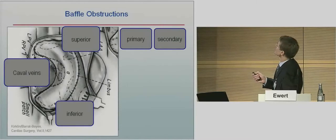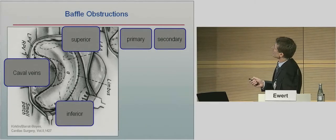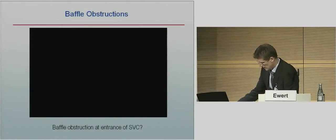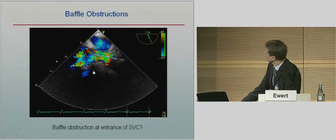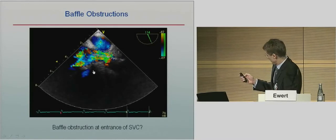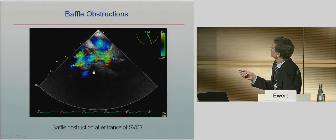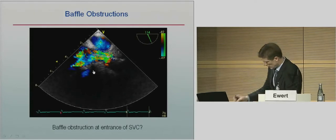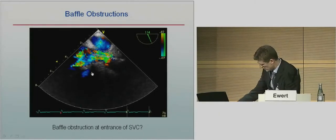Starting with baffle obstructions: when we have obstructions of the systemic veins - the caval veins - we have superior and inferior obstructions. I divide superior obstructions into primary and secondary. On echo of the superior caval vein, you can see a pacemaker lead in the superior caval vein. This is a transesophageal echo showing the pulmonary vein compartment and the superior caval vein going into the systemic vein compartment, with some green color possibly marking an obstruction or turbulent flow.